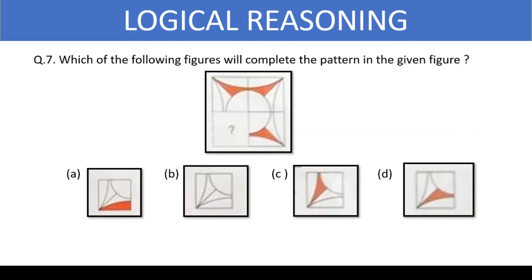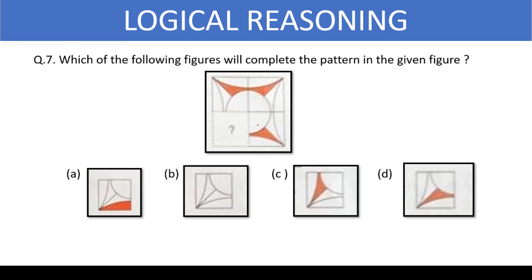Which of the following figures will complete the pattern in the given figure? Try to draw this symmetrically. It should be a circle, with certain parts, and the part covered with orange should match one of the options. Option D matches this part of the image to complete it. So that's the right answer.